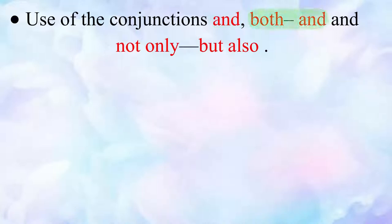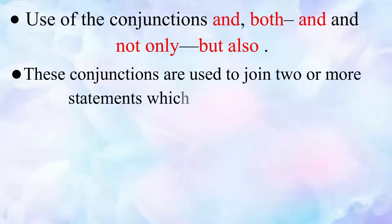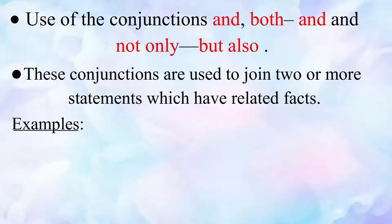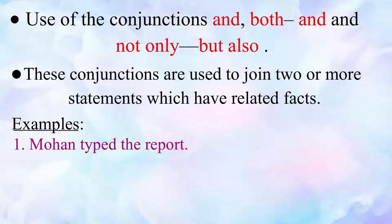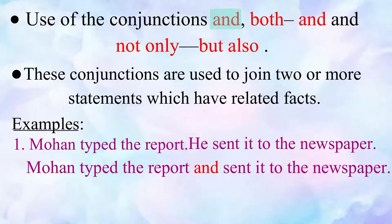Let us now see how to use the conjunctions 'and', 'both...and', and 'not only...but also'. These conjunctions are used to join two or more statements which have related facts. For example: Mohan typed the report and he sent it to the newspaper. We join these two independent statements using the conjunction 'and': Mohan typed the report and sent it to the newspaper.